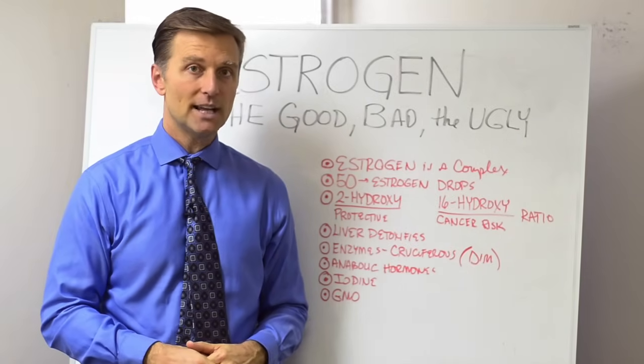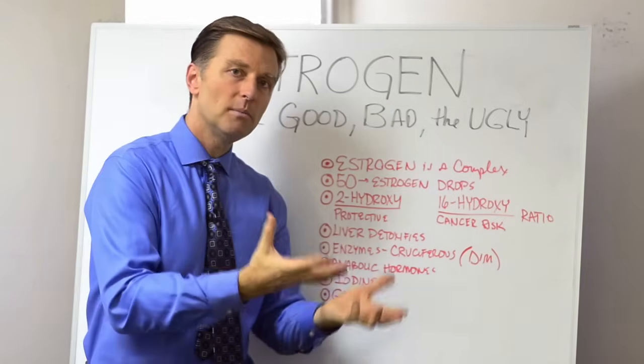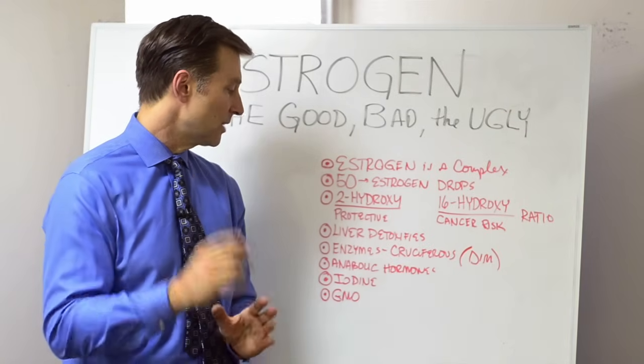Another thing is sea kelp. That's good too because it has iodine to actually help you lower the bad estrogen. It's really good for cysts and fibrocystic breast.